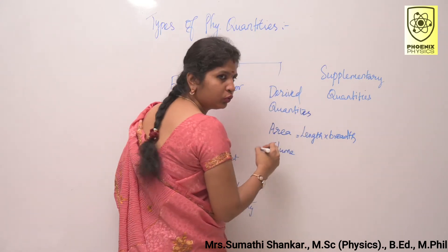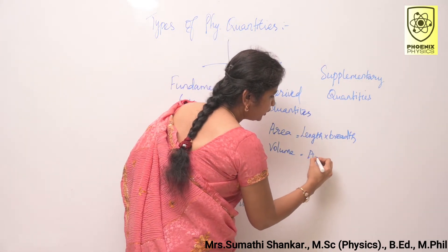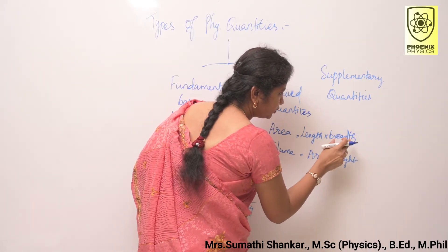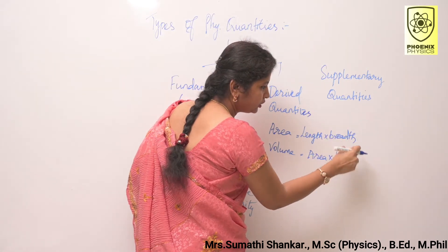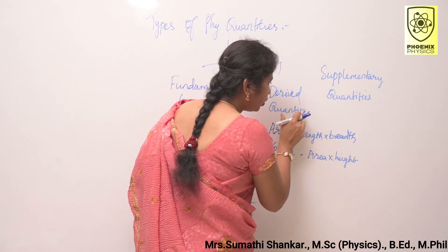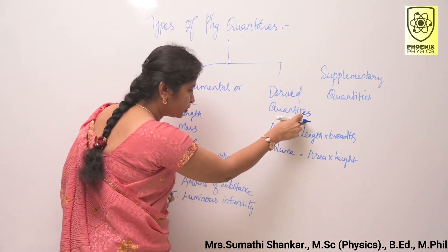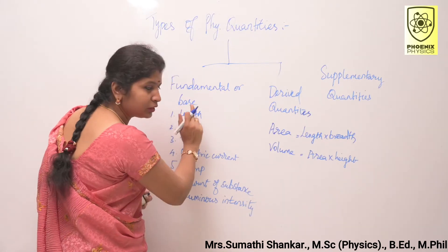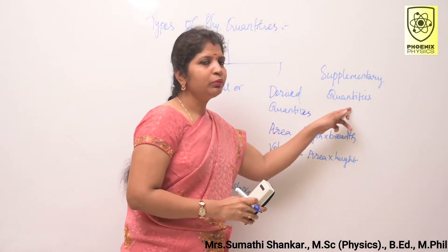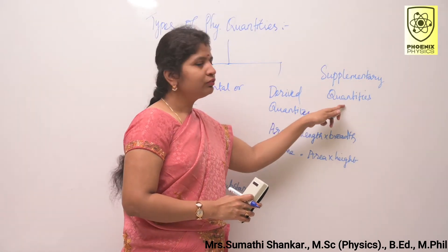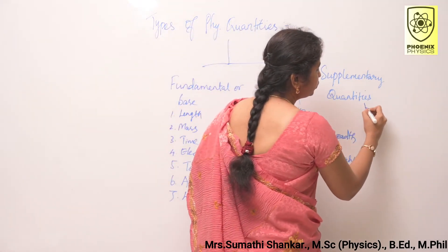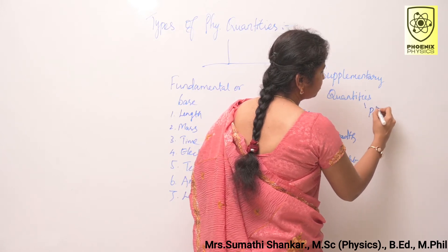For example, area is length into breadth, and volume is area into height. Here breadth means we are measuring length, and height also means we are measuring length. So derived quantities can be expressed in terms of fundamental quantities. Supplementary quantities will be discussed in our next video — there are two types: plane angle and solid angle.